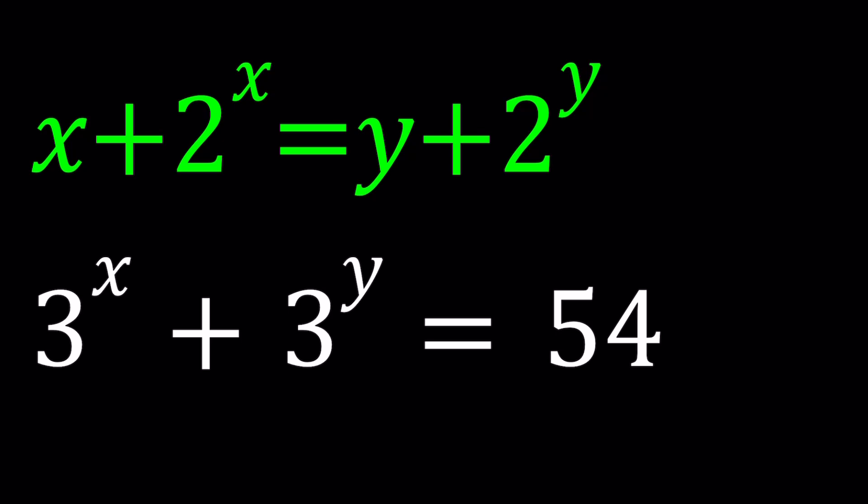Let's start with the first equation: x + 2^x = y + 2^y. Obviously this equation also has infinitely many solutions, but when you take these two together, hopefully we'll have a finite number of solutions.